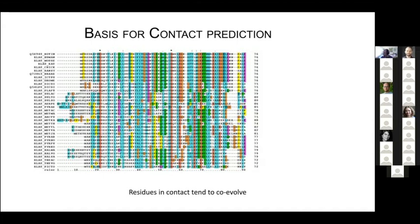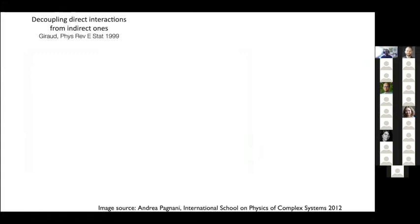The idea that people started using was to look at two columns at a time and examine whether there is any co-evolution or correlation between them. For example, you can have small and big amino acids, or positive and negative charges. If two residues are in contact, a big residue at one position and a small residue at another position will tend to co-mutate to maintain packing. This type of mutual information has been used to infer that two residues are in contact with each other — already done in the 1990s, but it didn't really work.